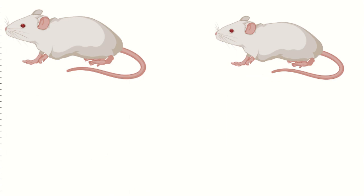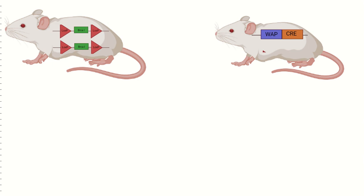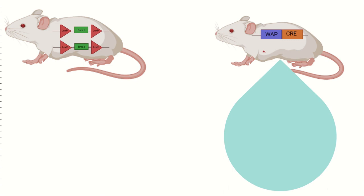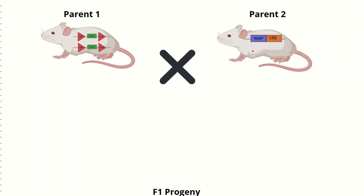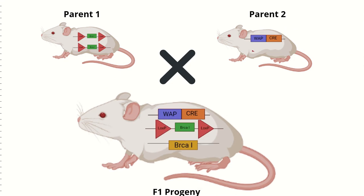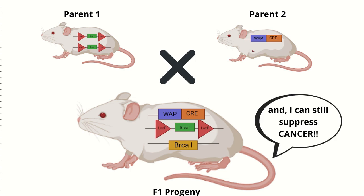The transgenic pups, upon maturing, will be of two types based on the two vector constructs: one with LOX P sites flanking the homozygous BRCA1 gene, and the other with Cre recombinase hemizygous gene controlled by the WAP promoter. It is also important to note that the mice with Cre recombinase also possess their own indigenous copies of BRCA1. Upon mating these two mice, the progeny will inherit a single BRCA1 gene flanked by LOX P sites from parent 1, while inheriting WAP-induced Cre recombinase and an indigenous copy of BRCA1 from parent 2. However, a single functional BRCA1 gene can still efficiently carry out tumor suppression.